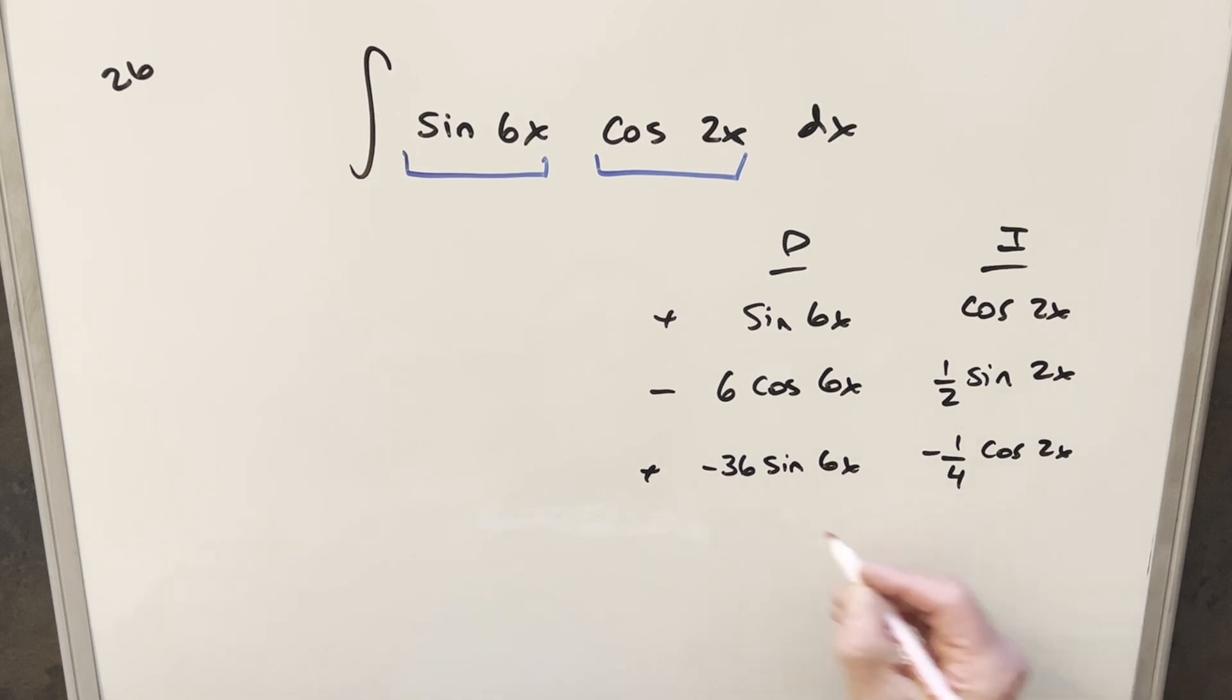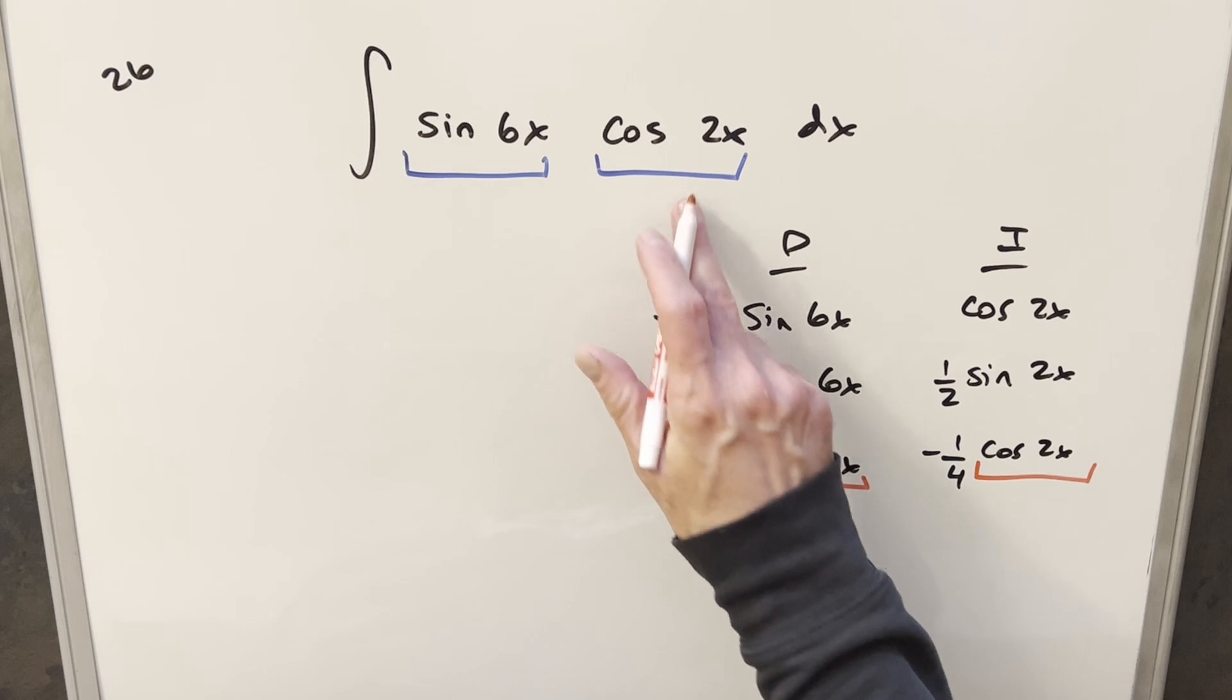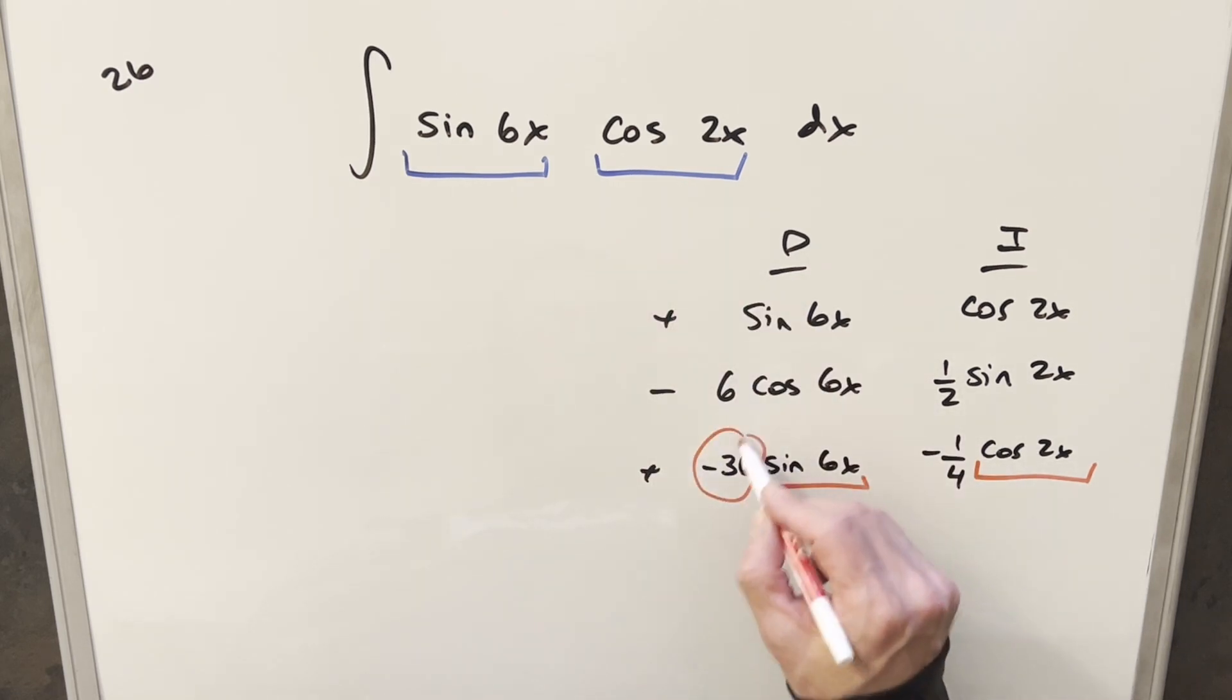And the reason I stop here is because now our integral repeats. We have sine 6x here. We have cosine 2x, so it's exactly the same as our integral, but we're going to have some kind of constant out front. So let's just see how this goes. We'll have part of our solution on the diagonals.